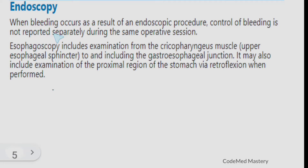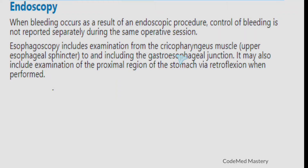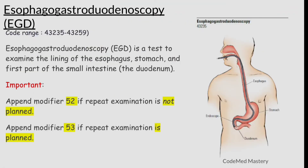The next guideline is about endoscopy: when bleeding occurs as a result of an endoscopic procedure, control of bleeding is not reported separately during the same operative session. Additionally, esophagoscopy includes examination from the cricopharyngeus muscle (upper esophageal sphincter) to and including the gastroesophageal junction, and may also include examination of the proximal region of the stomach via retroflexion when performed.